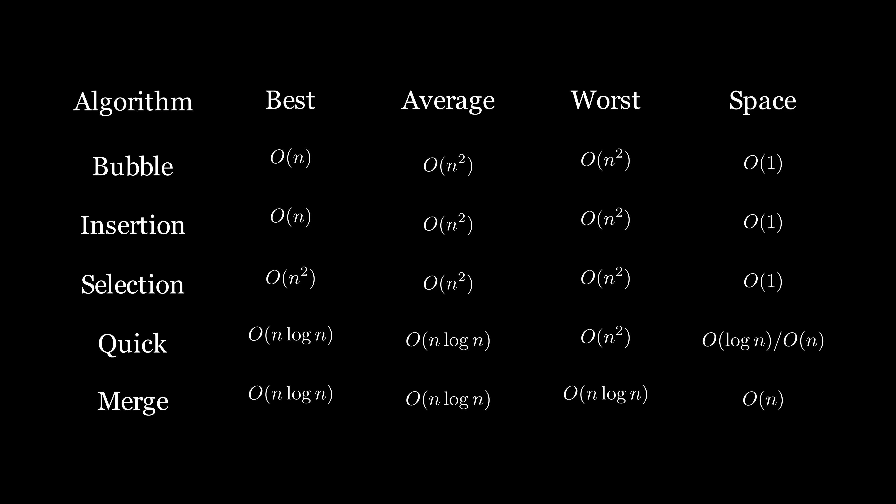This is a summary of the time and space complexities for all the sorting algorithms we've discussed. In the table, the columns labelled best, average, and worst represent the time complexities for each scenario. The space column indicates the space complexity for the algorithms. It's important to note that the space complexity remains consistent across all algorithms in all situations, except for quicksort, which can vary depending on the situation.